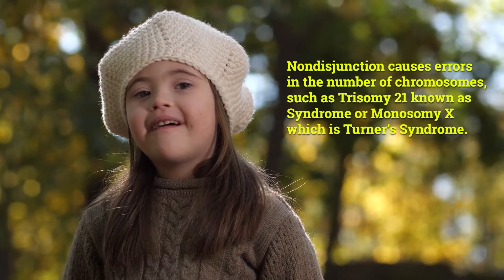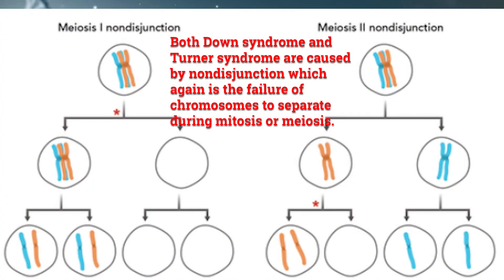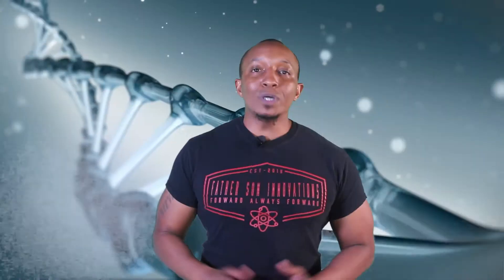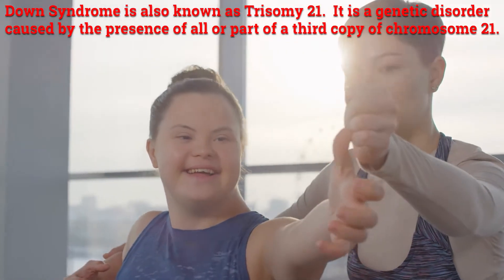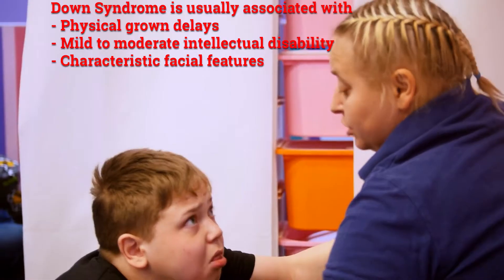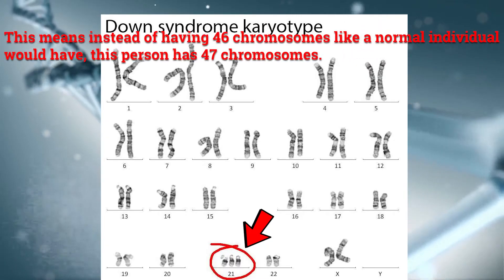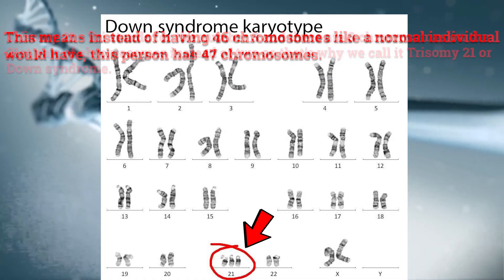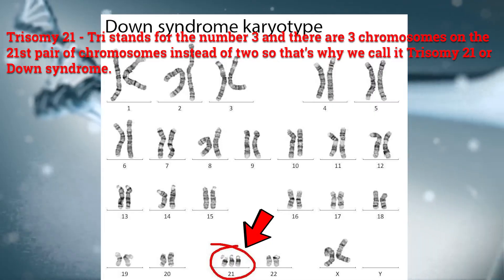Non-disjunction causes errors in the number of chromosomes, such as Trisomy 21, known as Down syndrome, or Monosomy X, which is Turner syndrome. Both of these syndromes are caused by non-disjunction, which is the failure of chromosomes to separate during mitosis or meiosis. Now let's discuss Down syndrome, also known as Trisomy 21 — a genetic disorder caused by the presence of all or part of a third copy of chromosome 21. It is usually associated with physical growth delays, mild to moderate intellectual disability, and characteristic facial features. Looking at the karyotype for Down syndrome, there are two chromosomes for all other pairs except for pair number 21. This means instead of having 46 chromosomes like a normal individual, this person has 47 chromosomes. Tris stands for the number 3, and there are 3 chromosomes on the 21st pair instead of 2, which is why we call it Trisomy 21.